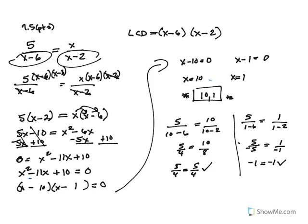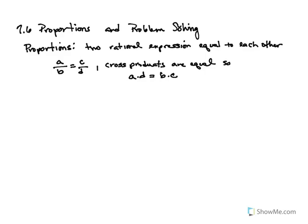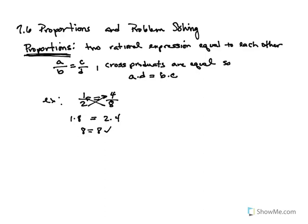That was Section 7.5. Now 7.6 deals with proportions and problem solving. Proportions is a basic math concept — basically two rational expressions or two ratios that are equal to each other. So A over B equals C over D, and the cross products are equal: A times D must always equal B times C. For example, 1 half equals 4 eighths. If we do cross products, 1 times 8 equals 2 times 4, which is 8 equals 8.